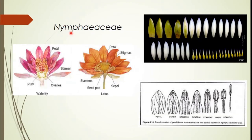In Nymphaceae — the lotus family, including plants like the lotus or water lily — we find a transition of one floral organ to another. The sepals gradually change as we move from one to the next: they start showing characters of petals, becoming colourful and more attractive. Then the petals start showing characteristics of stamens with the formation of anthers, and gradually the stamens show transition to the carpels.